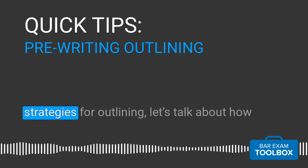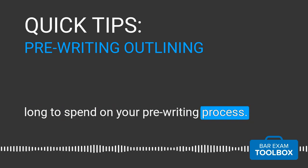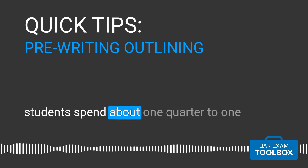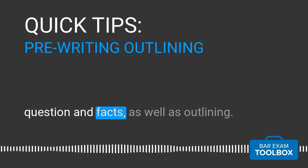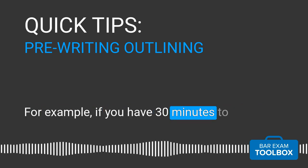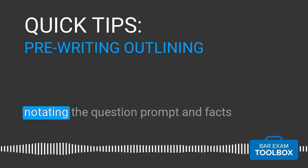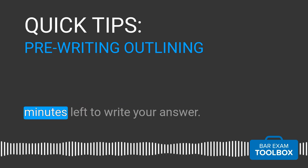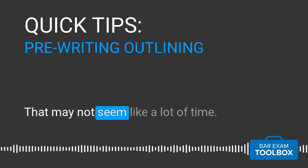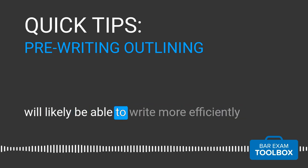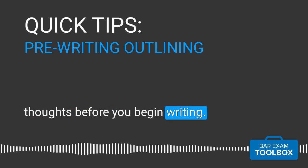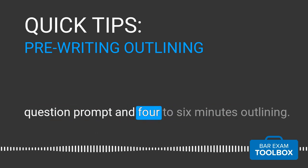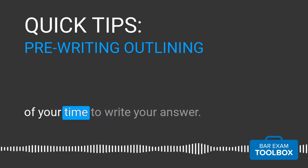Now that we have talked about different strategies for outlining, let's talk about how long to spend on your pre-writing process. There is not a one-size-fits-all answer, but we generally recommend that students spend about one-quarter to one-third of their time reading, notating, and outlining. For example, if you have 30 minutes to complete an essay question, plan to spend about five minutes reading and notating the question prompt and facts, and another two to three minutes outlining. This gives you at least 22 to 23 minutes left to write your answer. If you have 60 minutes, plan to spend eight to ten minutes reading and notating and four to six minutes outlining — again, leaving you 75% of your time to write.